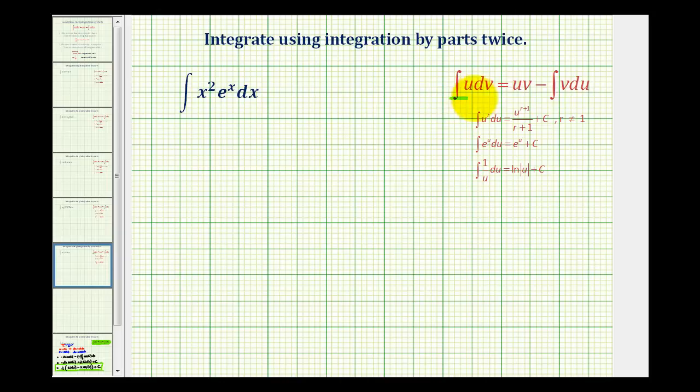Here's the formula for integration by parts. The guidelines are we want to select u so that differential u is simpler than u, and we want to select dv so that it's fairly easy to integrate to determine v. The guideline of choosing u so that differential u is simpler than u is probably the most significant.